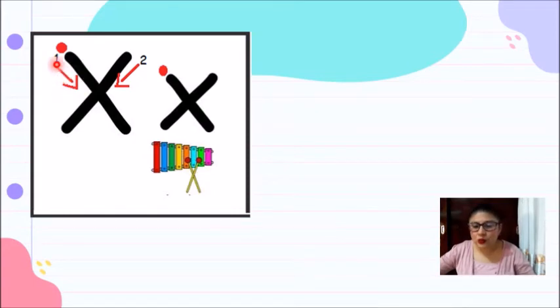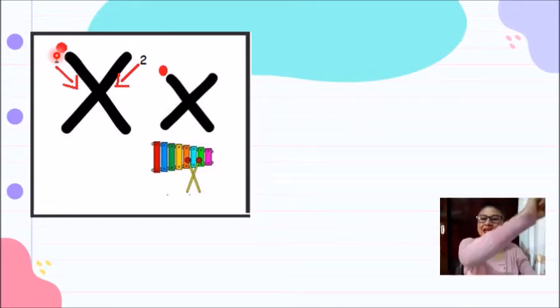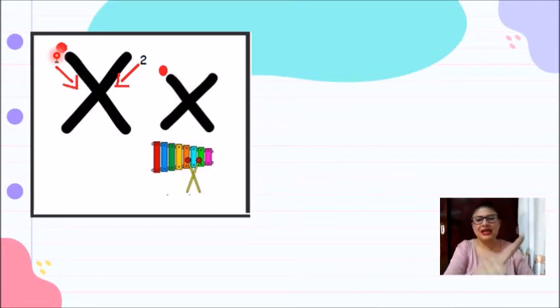Y también aquí está una flechita con un número 1. Este es el primer trazo que vamos a hacer. Entonces, empezando de arriba a abajo, del lado izquierdo a derecho, vamos a hacer una línea en diagonal.